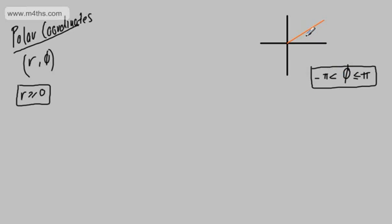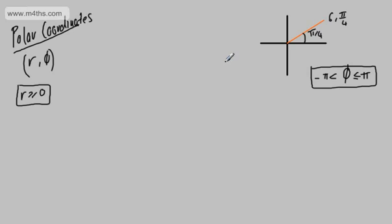So for example, if this was an angle of pi by 4 and had a length of 6, we could write this as 6 comma pi by 4. And that is now the polar form for that set of coordinates.